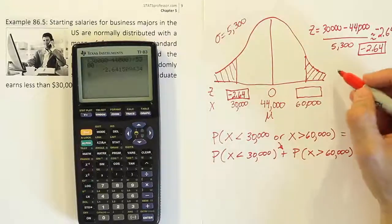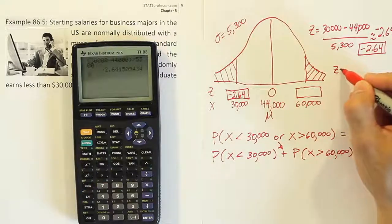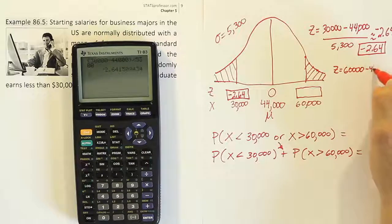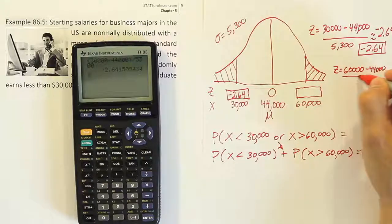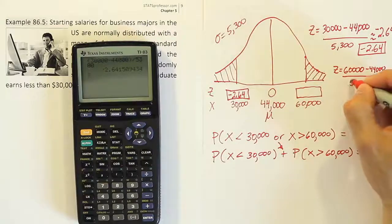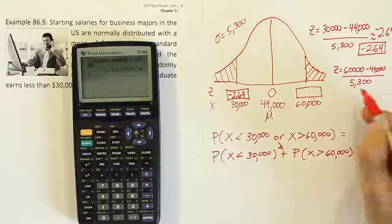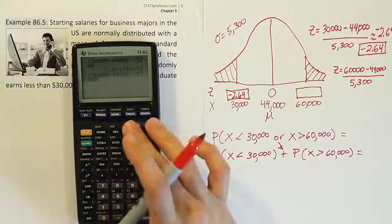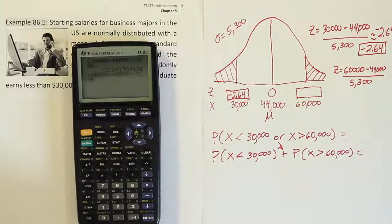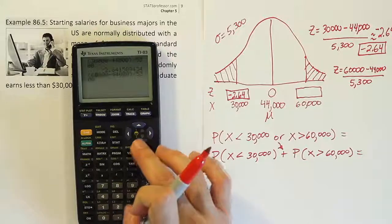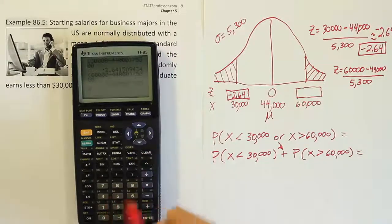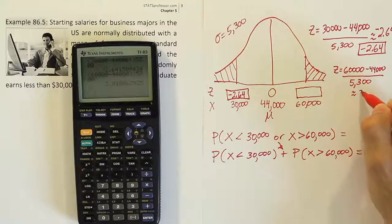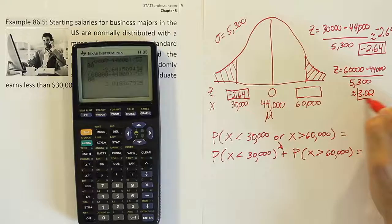Now we do the next Z-score in the same fashion. So the Z-score for that one will be the number we want to convert, which is 60,000 minus 44,000, divided by 5,300. So let's plug that into our calculator. I'm going to come up here and convert this to 60,000. So then it's 60,000 minus 44,000 divided by 5,300. And when I'm done, I get 3.02 if I round. So 3.02 becomes that Z-score.